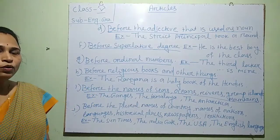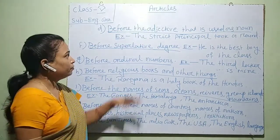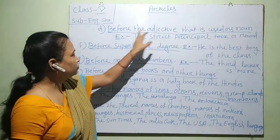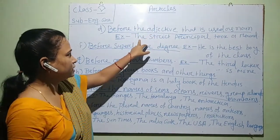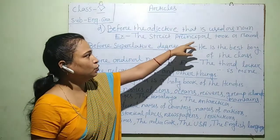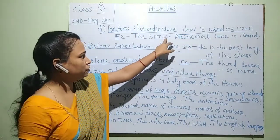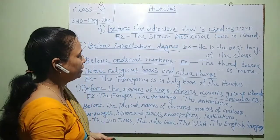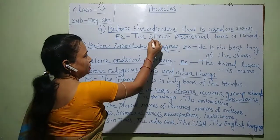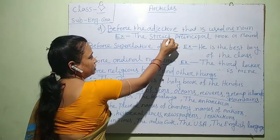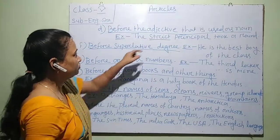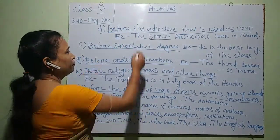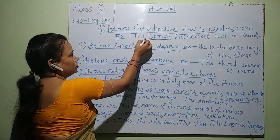We will use 'the' before an adjective that is used as a noun. For example: 'The strict principal took a round.' In this sentence, the adjective word is 'strict'. So here I use 'the' before it.